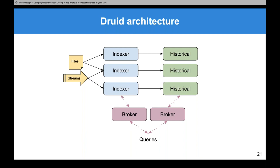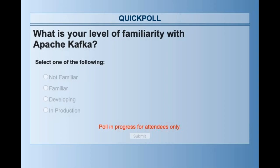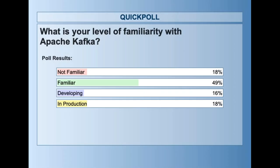Let's ask a couple of questions because I'm curious how familiar people are with the different technologies. First, how many of you know Kafka and how well? From what I can see here, a little over 80% are familiar in some way, and about a third are developing in production. About half of you are figuring out what to do with it. So pretty familiar with Kafka. Now let's push the next question about Druid.